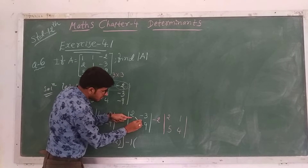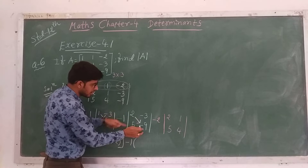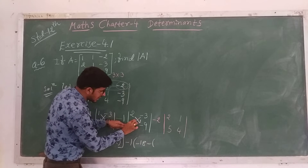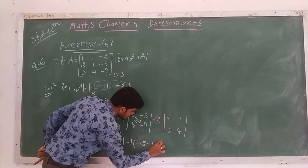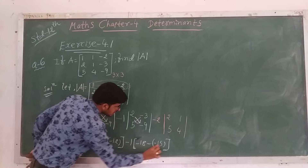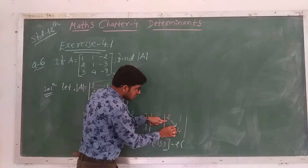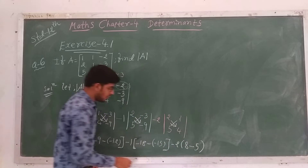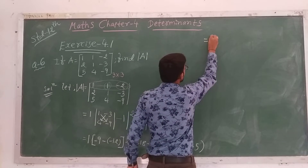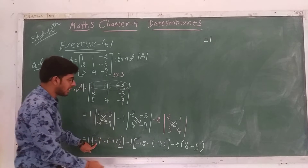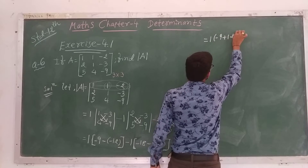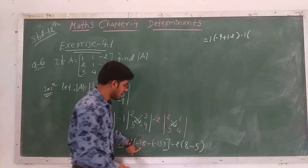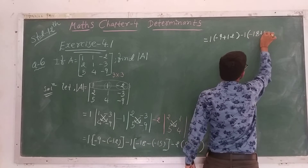For the second 2×2 determinant, multiplication of the principal diagonal: 9 × 2 = 18 but with minus sign, so -18. Minus the multiplication of the secondary diagonal: 3 × 5 = 15. Since -2 already carries a minus, it becomes minus 15. And for the last term, minus 2 as it is: principal diagonal 4 × 2 = 8, minus secondary diagonal 5 × 1 = 5.